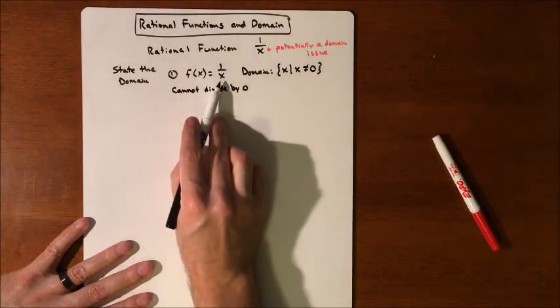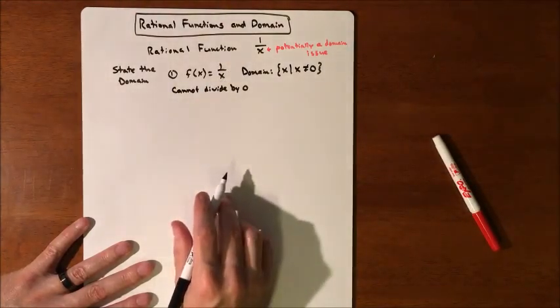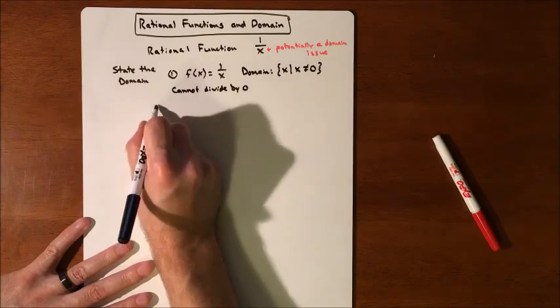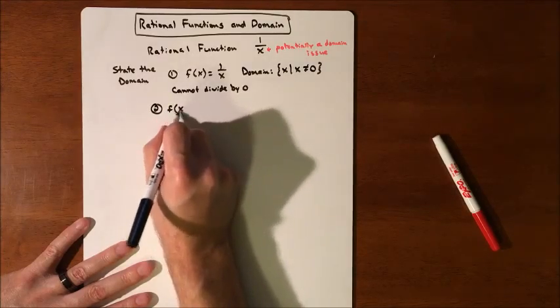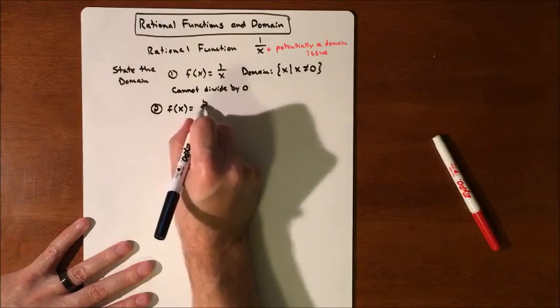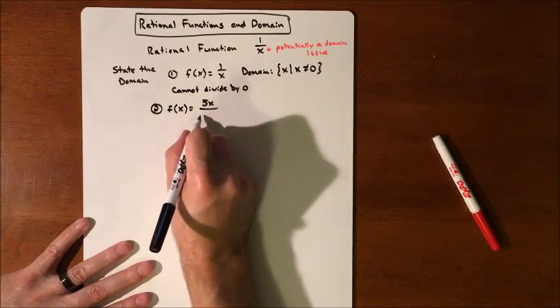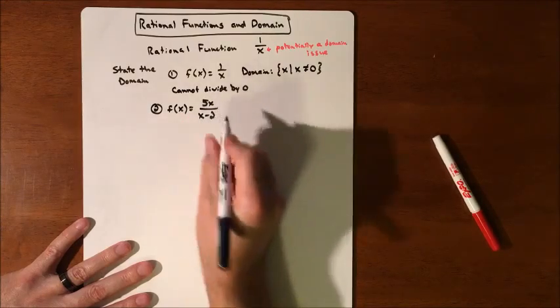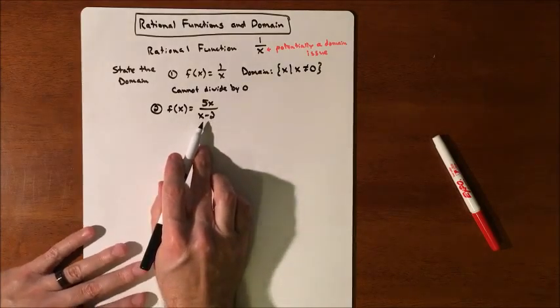Because if we plug in zero, it's one divided by zero, and that's no good. So let's take a look at a couple different ones. If we have 5X divided by X minus 2, it's a rational because we have a variable in the denominator.